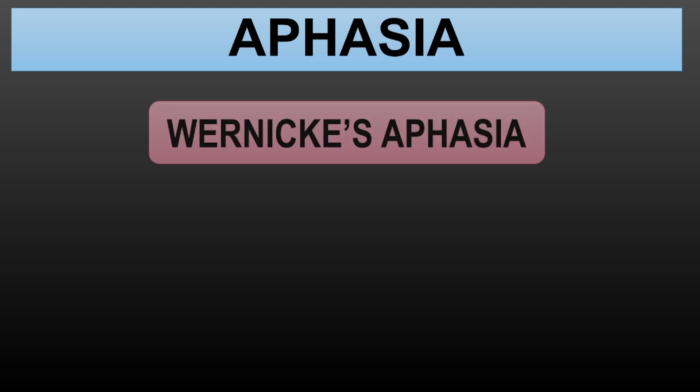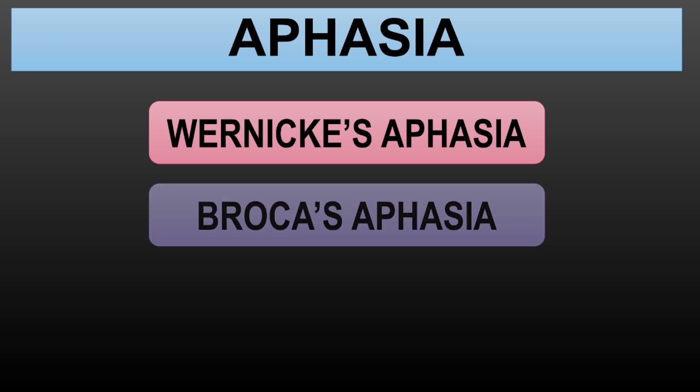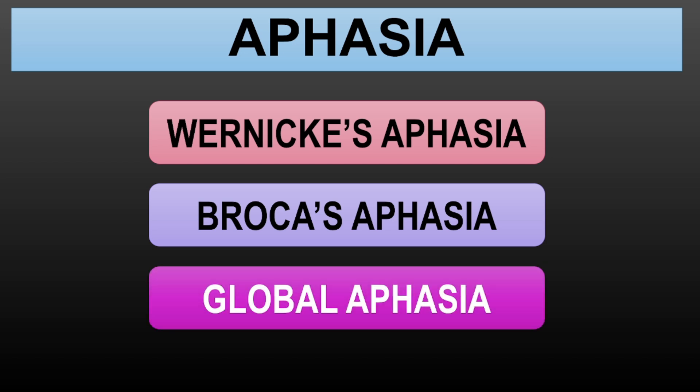Aphasia is a condition that affects a person's ability to communicate, typically resulting from damage to Wernicke's or Broca's areas. Wernicke's aphasia affects comprehension, while Broca's aphasia affects speech production. Global aphasia is more severe and impacts both areas. These language disorders highlight just how complex the brain's communication network is.